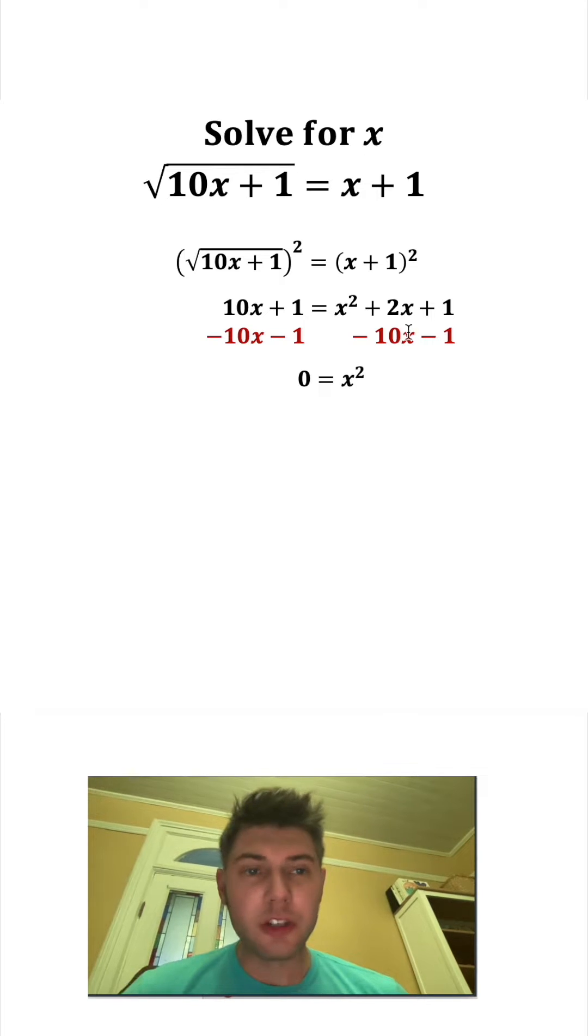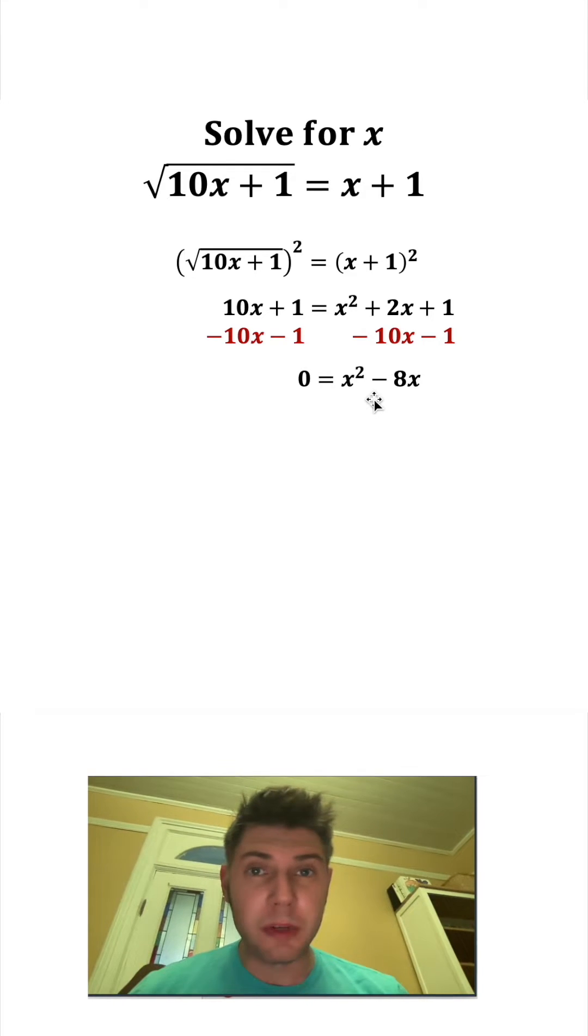On the right-hand side, we have x squared. 2x minus 10x is negative 8x, and then 1 plus negative 1 is nothing. In order to solve this, we need to factor.